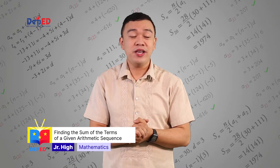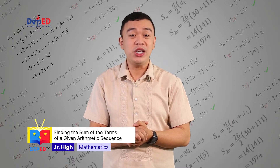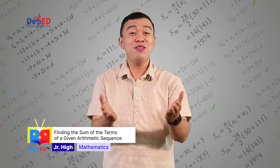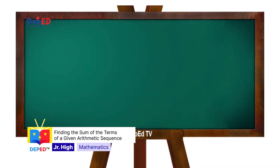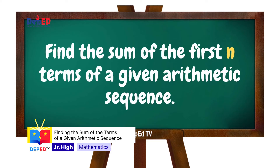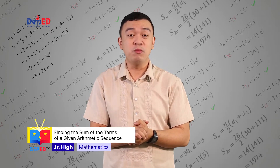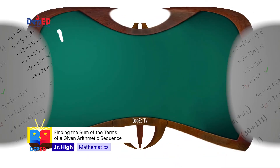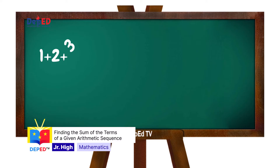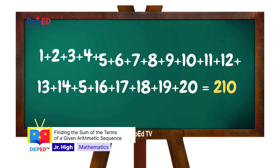To let you experience getting the sum of the terms in a sequence manually, let's do the following. Number 1: Find the sum of the first 20 natural numbers. By listing all the natural numbers from 1 to 20 and adding them, we have 1 plus 2 plus 3 plus 4 up to 20, which equals 210. Thus, the sum of the first 20 natural numbers is 210.